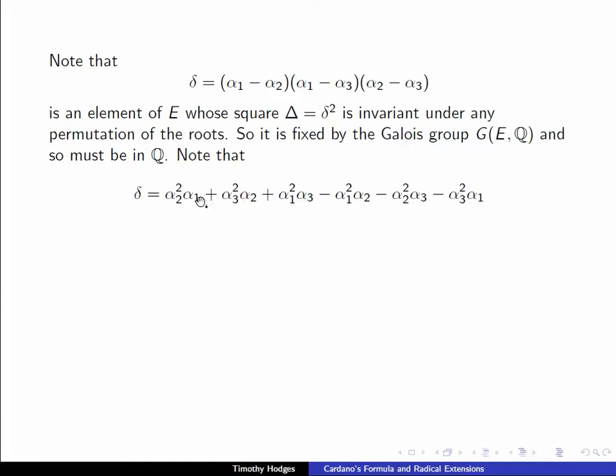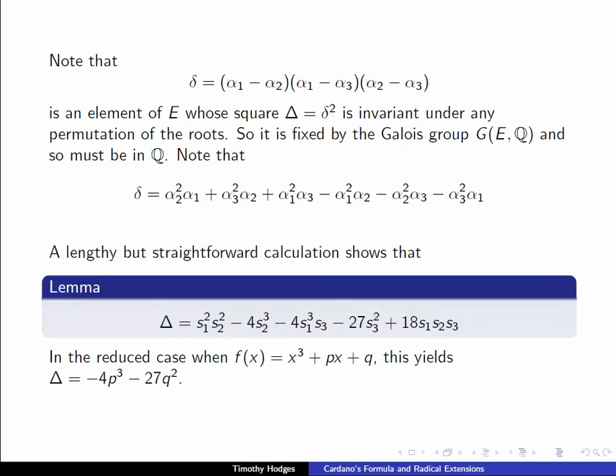To see what δ² is explicitly, we just do a fairly lengthy calculation which is painful but straightforward, and we get the capital Δ, which is δ², given by this combination of the elementary symmetric functions.